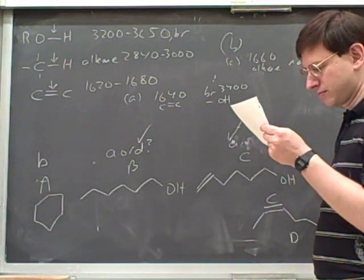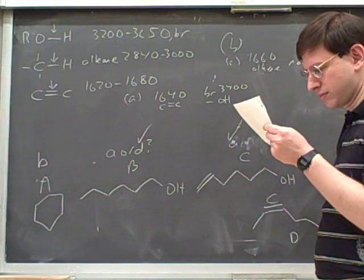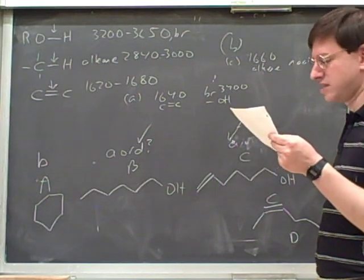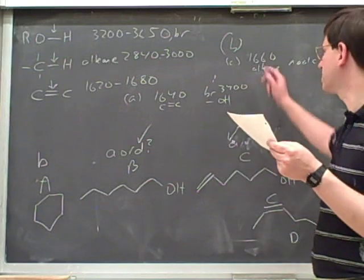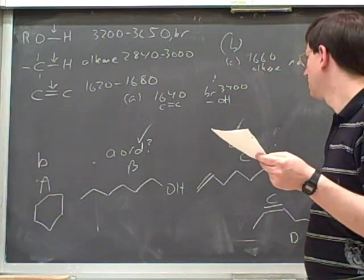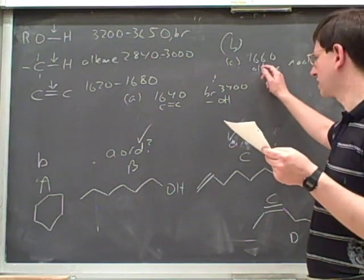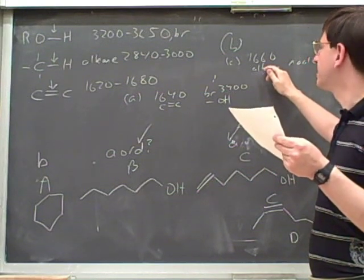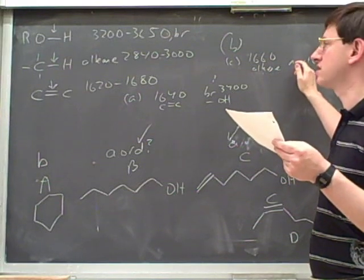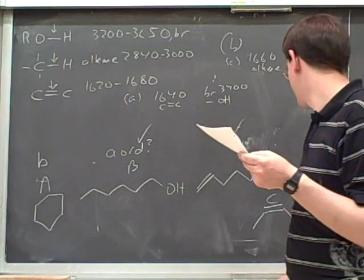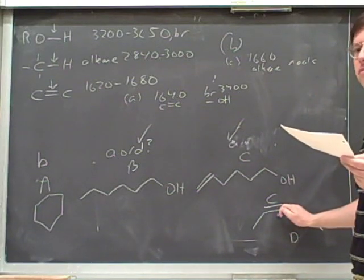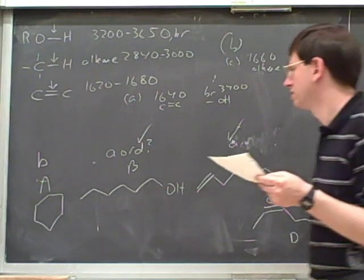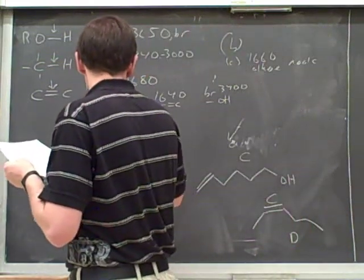So lowercase c has a 1665, which seems to indicate an alkene, but it doesn't have any alcohol absorptions. That would represent exactly this molecule — lowercase c is the one with the alkene but no alcohol absorptions. And then lowercase d has only the alcohol. So it looks like you worked that out correctly.